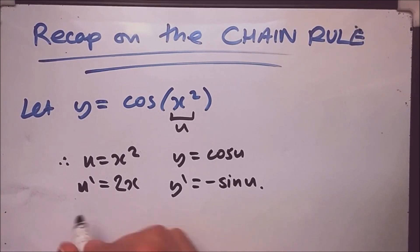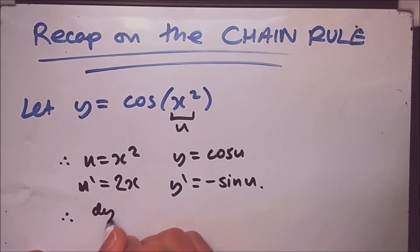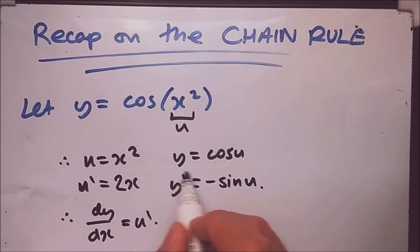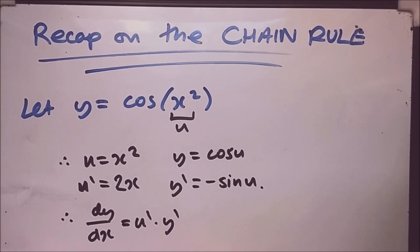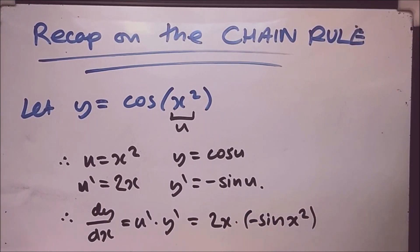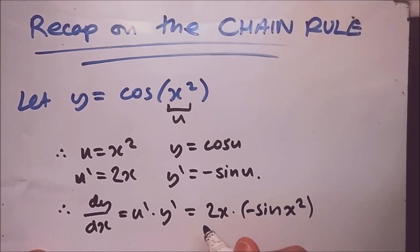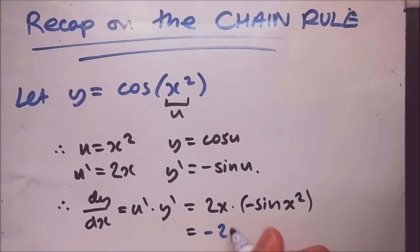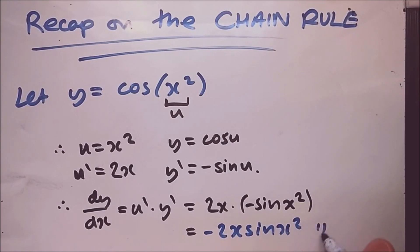By the chain rule, dy/dx equals u prime times the derivative of the outer function. Substituting everything in, we get 2x times minus sine(u), and replacing u with x squared gives us minus 2x·sine(x²). That's how you apply the chain rule.